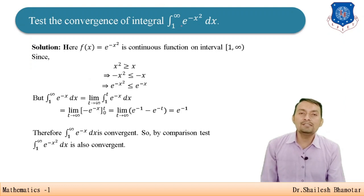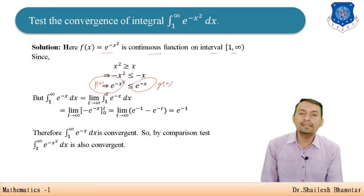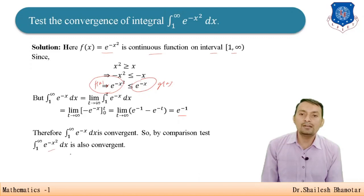Example 2: Test the convergence of ∫₁^∞ e^(−x²) dx. Since e^(−x²) is continuous on [1, ∞), and x² ≥ x for x ≥ 1, we have −x² ≤ −x, so e^(−x²) ≤ e^(−x). Here g(x) = e^(−x) and f(x) = e^(−x²). Evaluating ∫₁^∞ e^(−x) dx as a type 1 improper integral gives e^(−1), a finite quantity. Therefore ∫₁^∞ e^(−x²) dx is convergent by the comparison test.